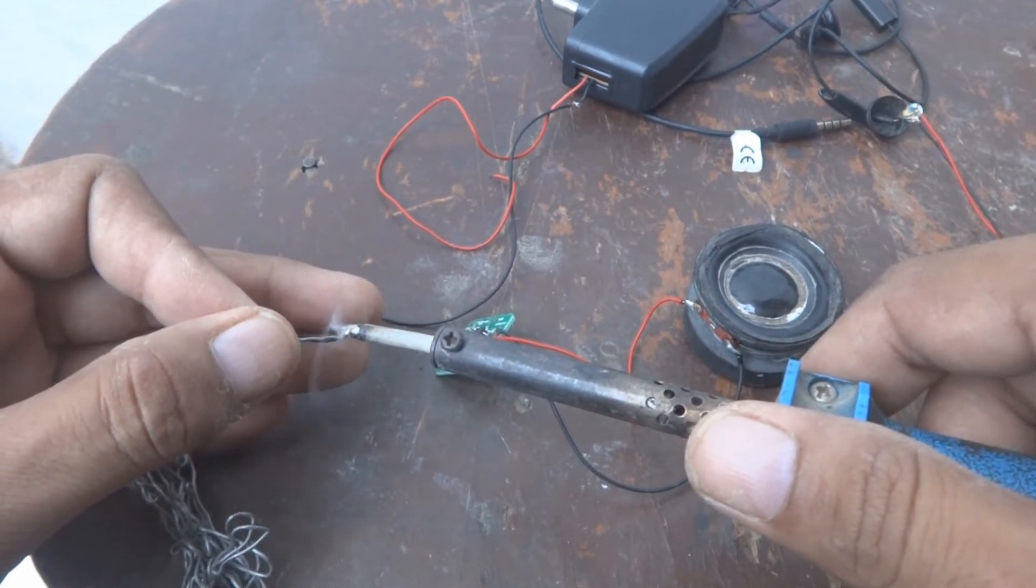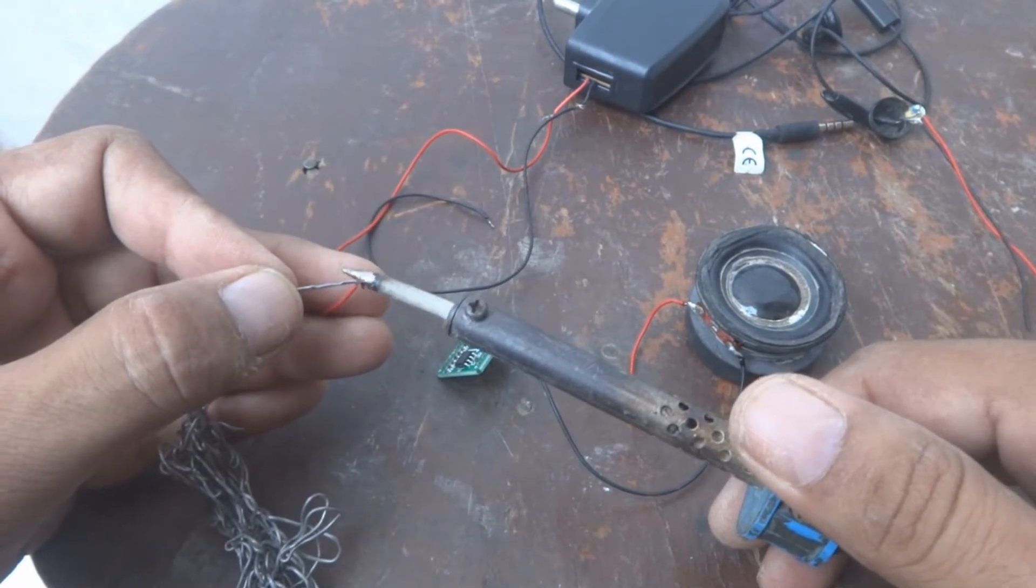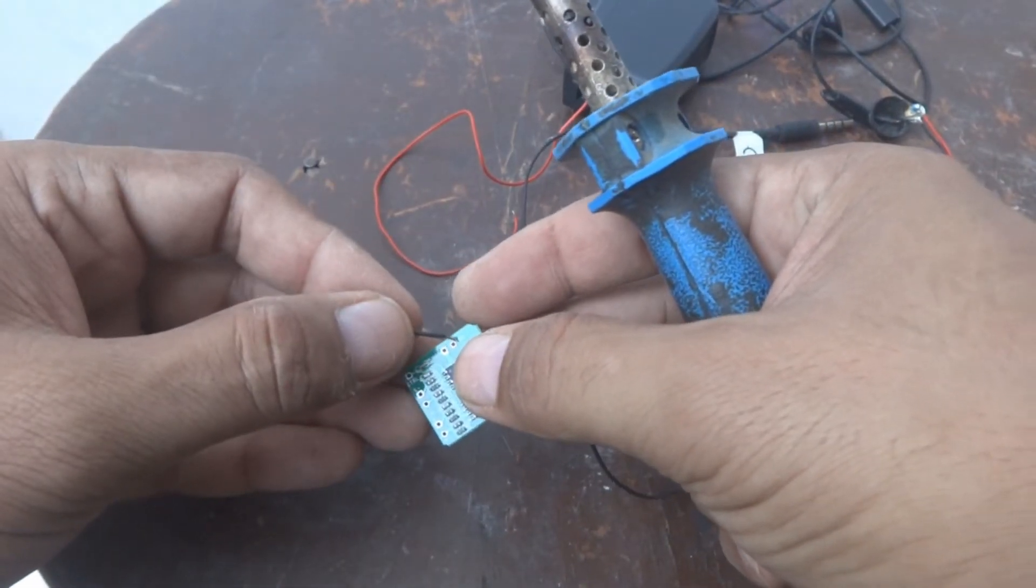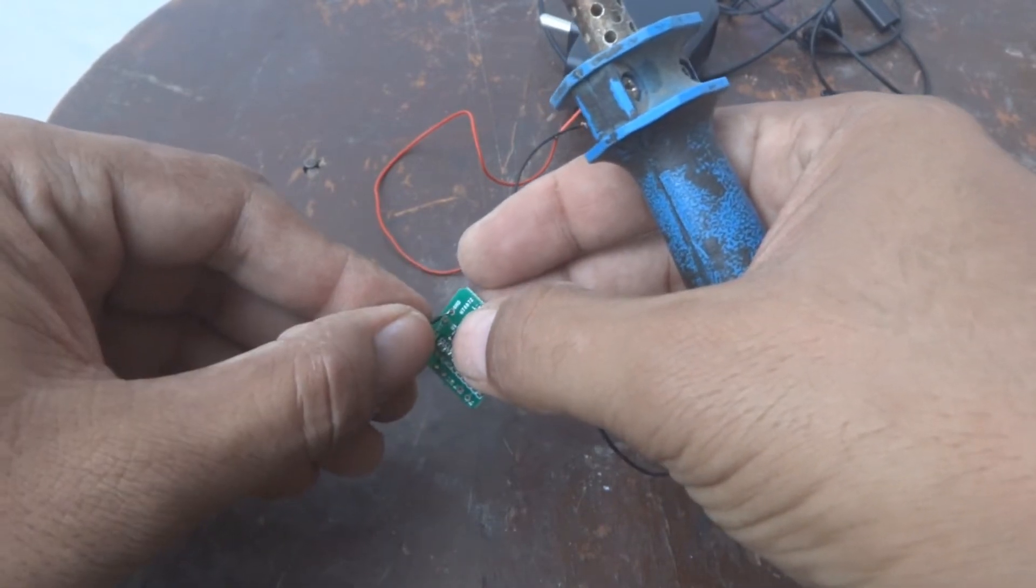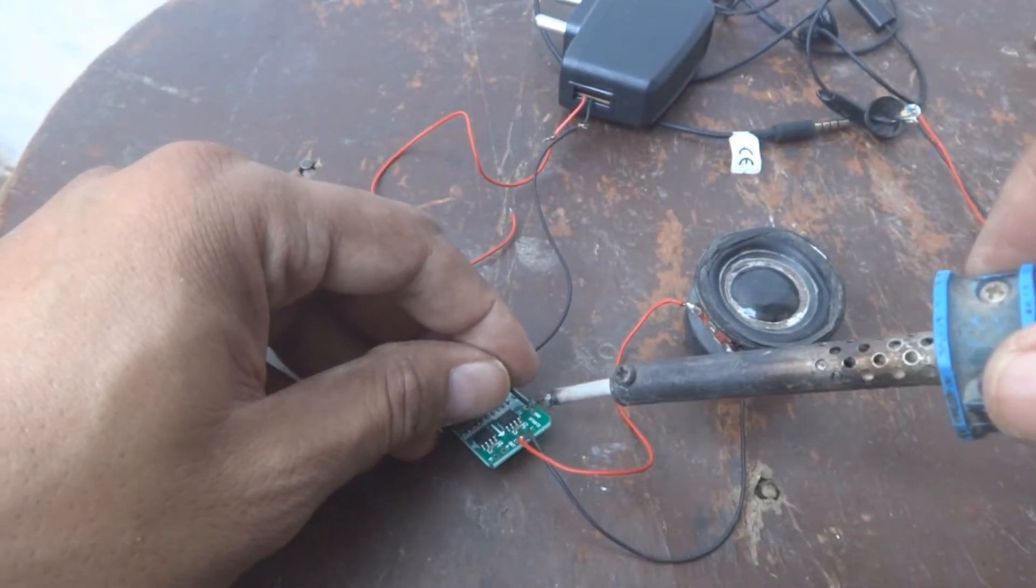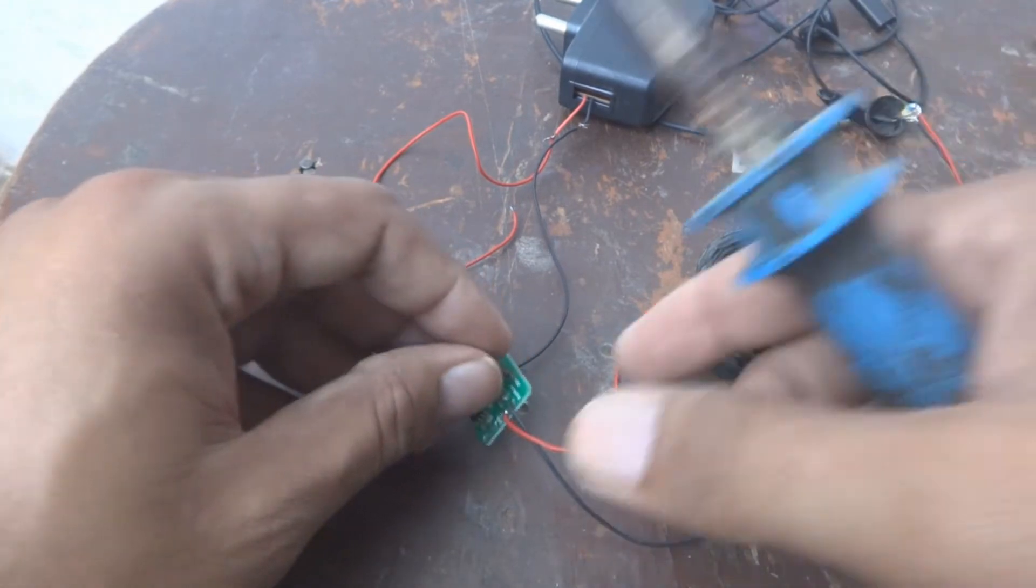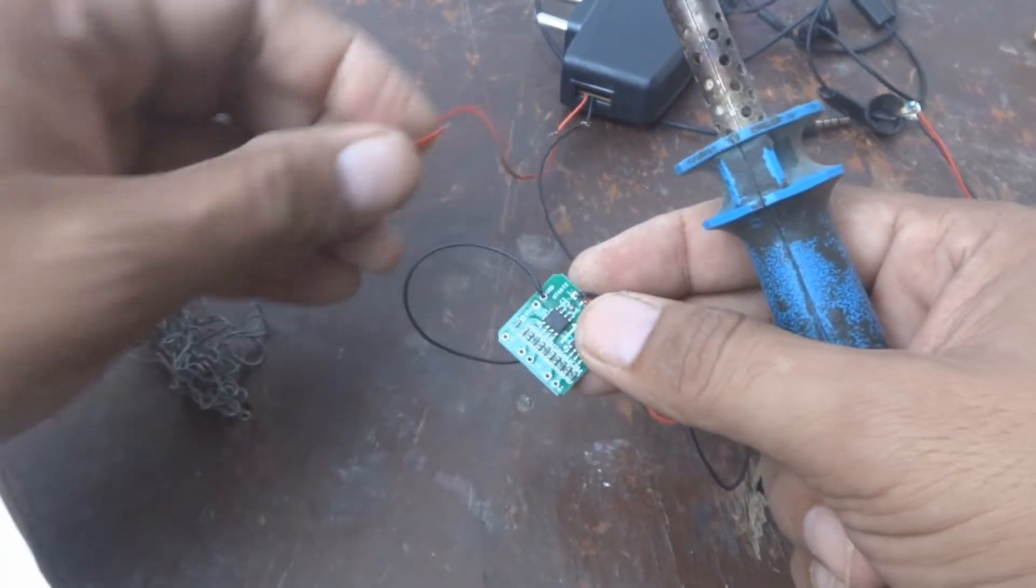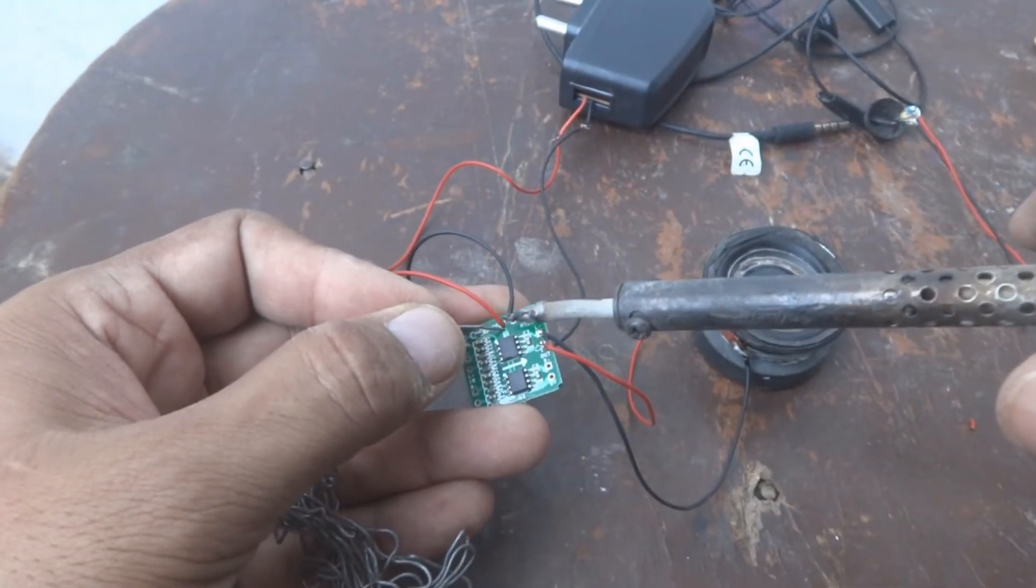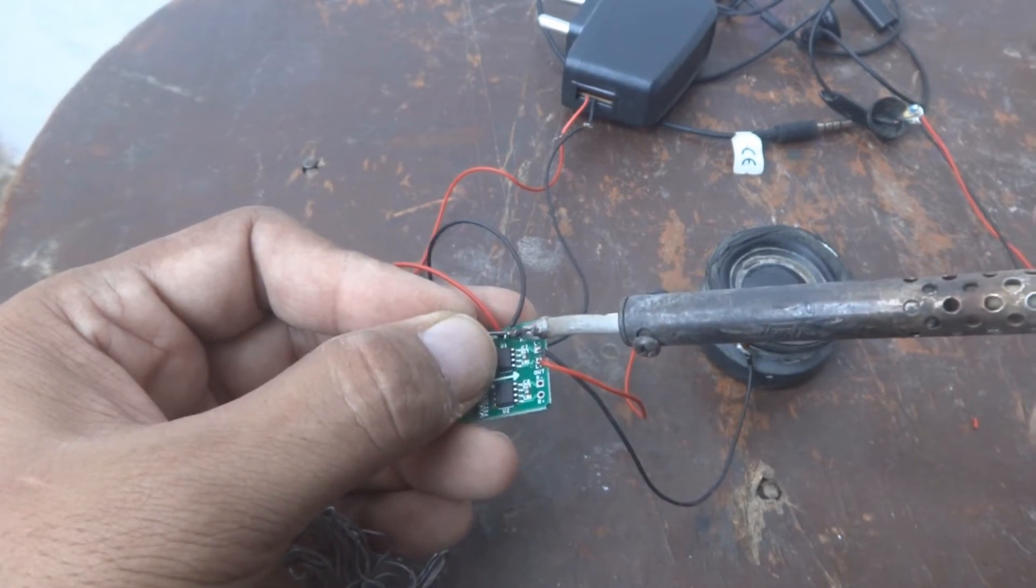I'm twisting the wires for the power supply - ground and VCC. First I have to connect the ground. The ground is connected, now the VCC. I'll also make the ground connection a little more perfect.